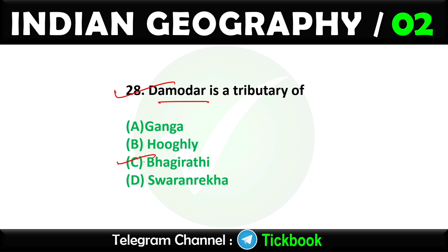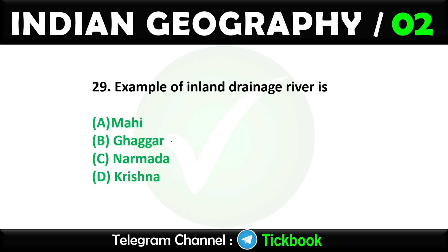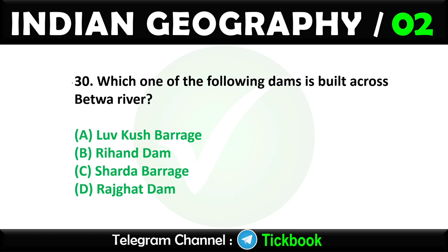Question twenty-eight: Damodar is a tributary of. Option number C is the right answer: Bhagirathi. Question twenty-nine: An example of an inland drainage river is. Option number B: Ghaggar is the right answer. Question thirty: Which one of the following dams is built across Betwa river? Option number D: Rajghat Dam.